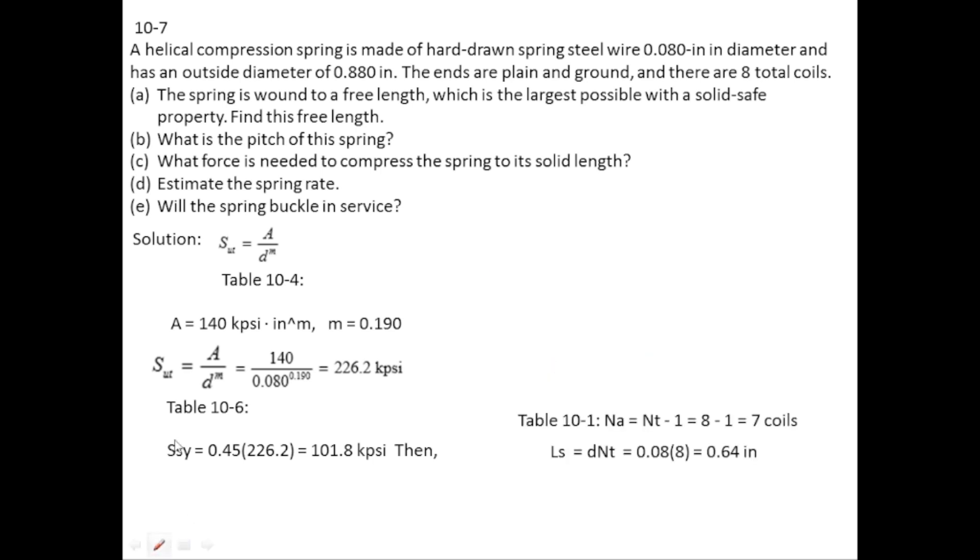0.88 is the external diameter. So mean coil diameter equals external diameter minus wire diameter, which is 0.88 minus 0.08, giving 0.8 inches. C is the ratio between mean coil diameter and wire diameter, so 0.8 divided by 0.08 gives 10.